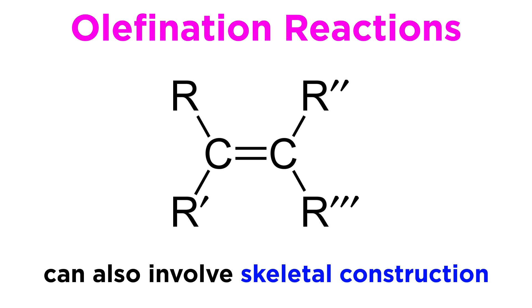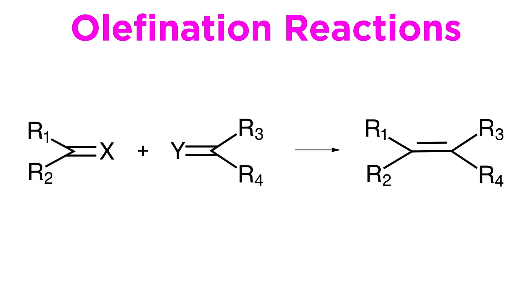Here, however, we will be talking about olefinations which involve skeletal construction steps. This can be represented as shown here. As we can see, two activated carbon units are joined in one reaction, although often by complex multi-step reaction mechanisms, to form a double bond that connects the two units.